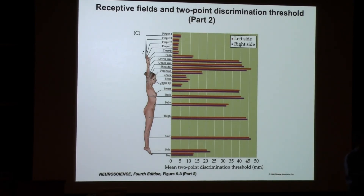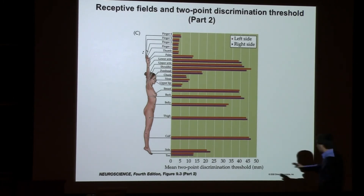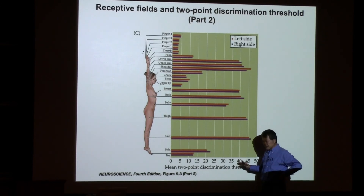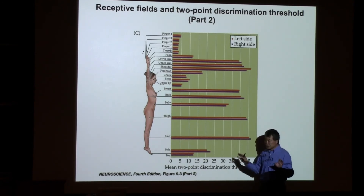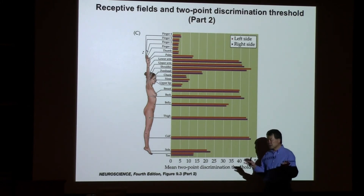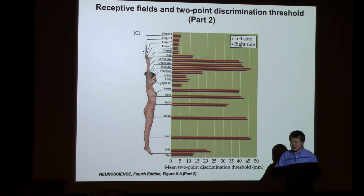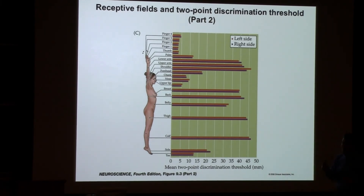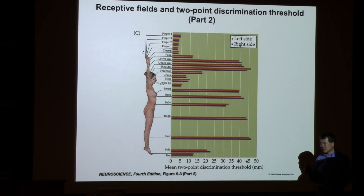Most neuroscience literature is based on animal studies, but we use examples from humans because they are more intuitive and medically relevant. A student asks why left and right sides are different in the homunculus. For the most part in somatosensory system, there is no systematic difference in terms of receptive field. The brain's control of left versus right side has some differences we will discuss, but for this type of measurement in normal people there is no noticeable difference.